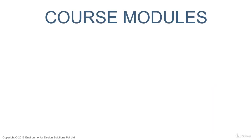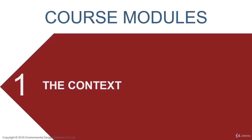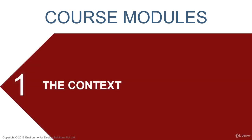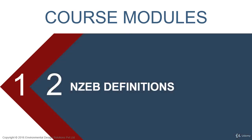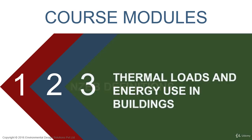There are six modules in this course. The first module will introduce you to the concept of NZEBs and the associated technical terms and definitions. There are many definitions for NZEB which will be discussed in detail in Module 2. Clarity on thermal loads and energy use in buildings is important to understand how to get to Net Zero, and this will be covered in Module 3.